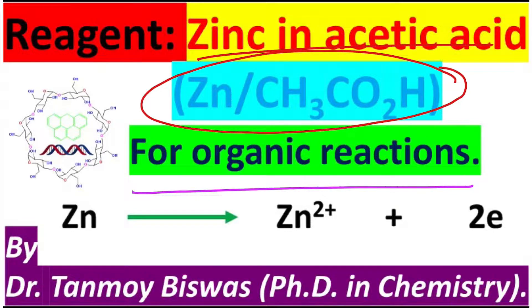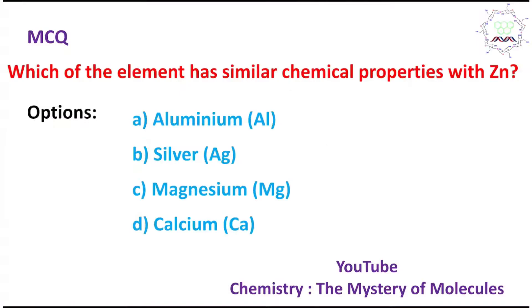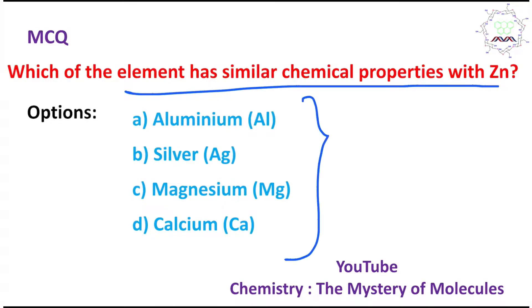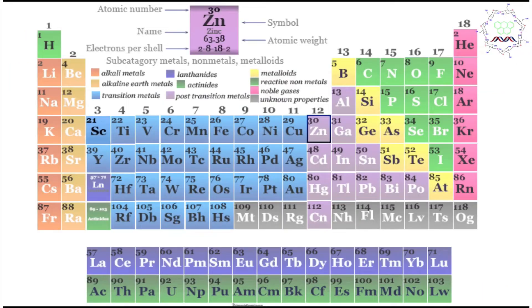Before going into the details, here is one MCQ: which element has similar chemical properties with zinc? Four options are provided. Please pause the video and write your answer in the comment box. At the end of the discussion you will get the right answer. Remember: self-evaluation is essential for improvement, so please try by yourself first.